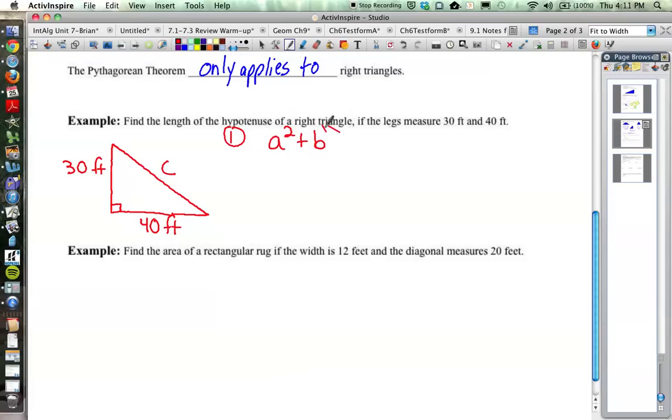a squared plus b squared is equal to c squared. And for whatever reason, the active board is giving me trouble here. Be equal to c squared. And so let's plug in our numbers here. So step two. We've got 30 squared as one leg. We've got 40 squared as the other leg.